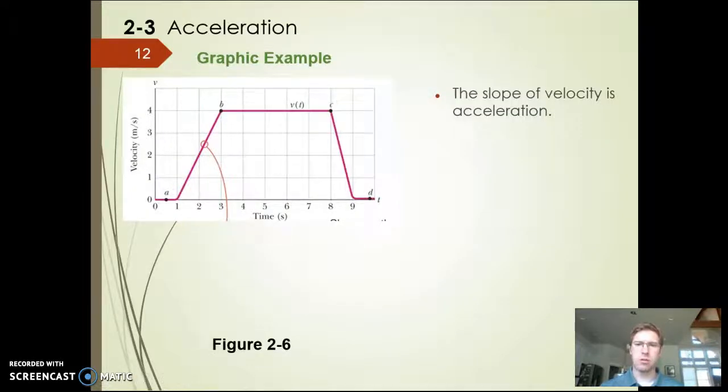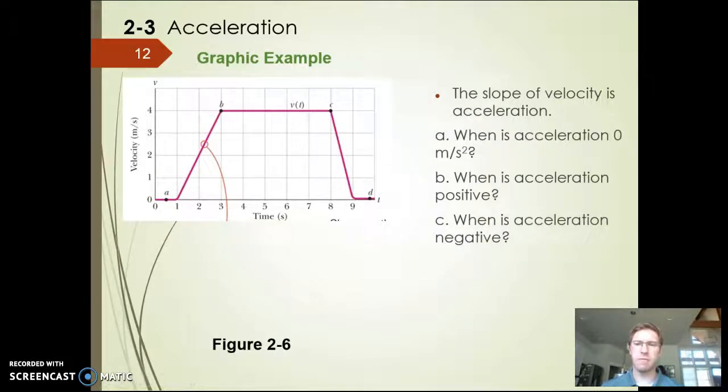Let's look at this graphically now. I have the same graph from before, but now this is our velocity versus time graph from the same motion that we described in the last question. I want you to pause the video here, and I want you to tell me where is the acceleration going to be zero, where is it going to be positive, and where is it going to be negative. Pause and try it out.